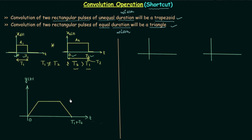We draw the trapezoid since we know the resultant signal is a trapezoid. However, the output waveform is incomplete because there are infinite possibilities for this trapezoid. We are only sure about the extension from 0 to t1 plus t2, but we are not sure about the other parameters — specifically the amplitude or height of the trapezoid, and the two time instants that define the flat top.